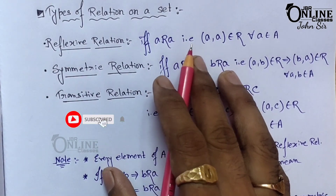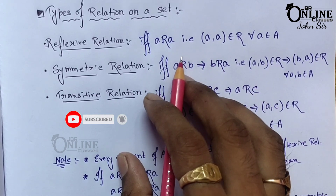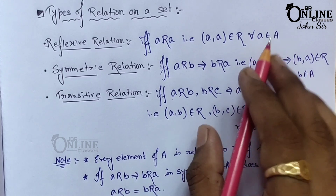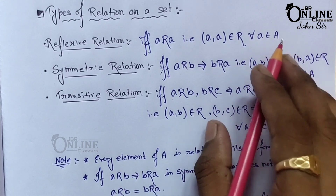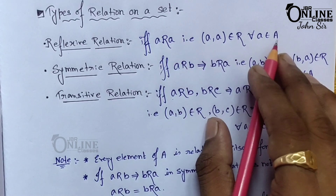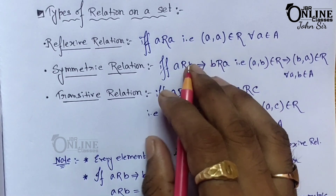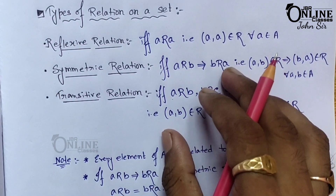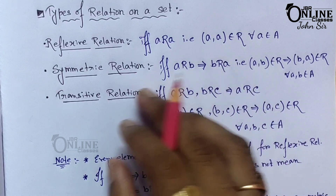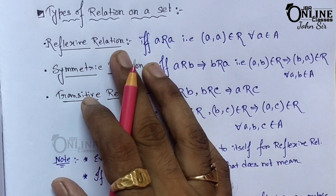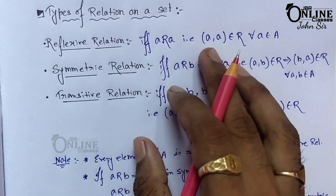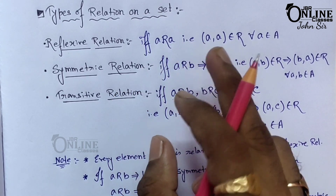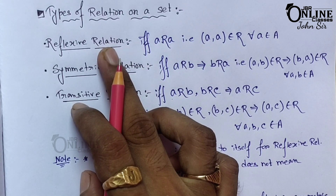To understand these concepts properly, let us consider an example. Let capital A be the set of all triangles drawn in a plane, and let a, b, c be three triangles in that plane. For the reflexive relation: every triangle is similar to itself — so that means this is a reflexive relation.